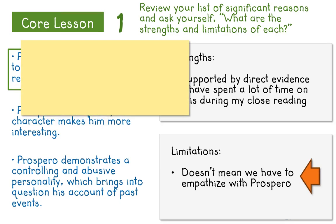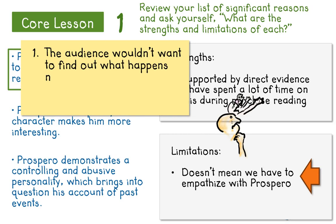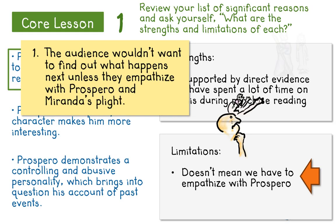I'll make a note so I can refer to this as I'm drafting. I will want to stress that the audience really wouldn't want to find out what happens next in the play unless they empathize with Prospero and Miranda's plight to some degree. Prospero's motive establishes dramatic tension and advances the plot — if we didn't relate at all to his feelings, we probably wouldn't be interested in any of the rest of the play.